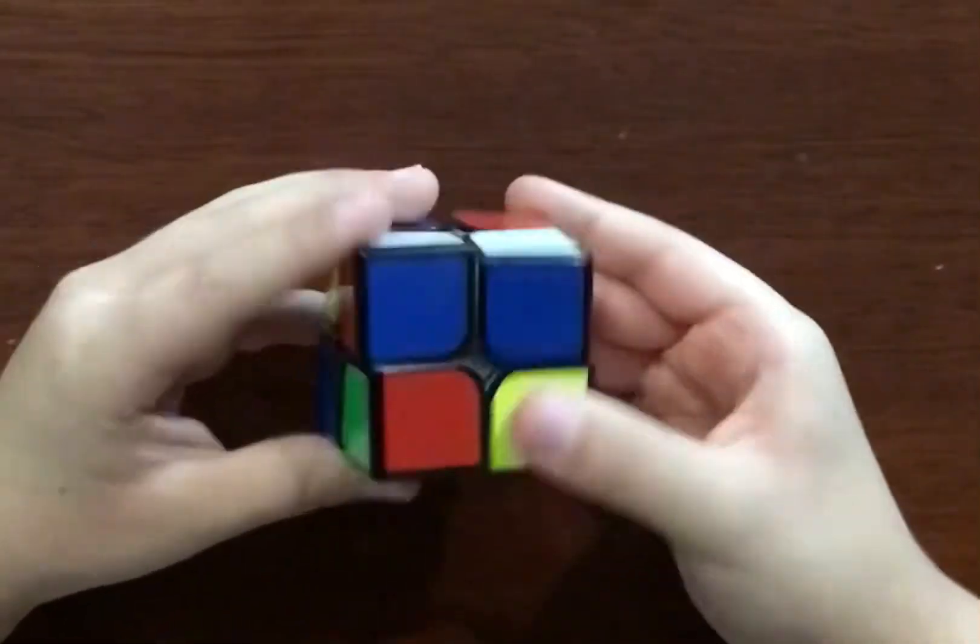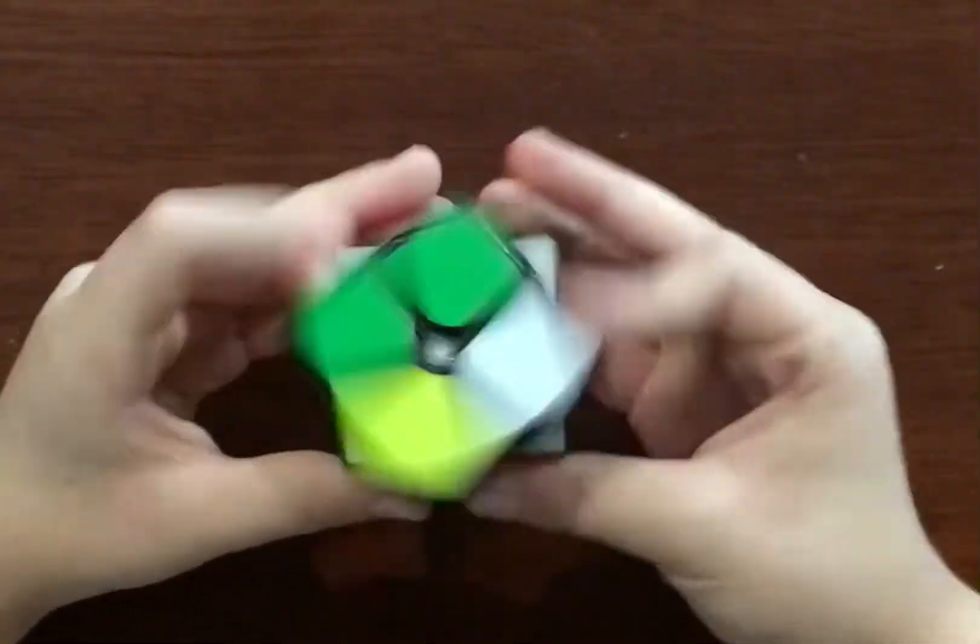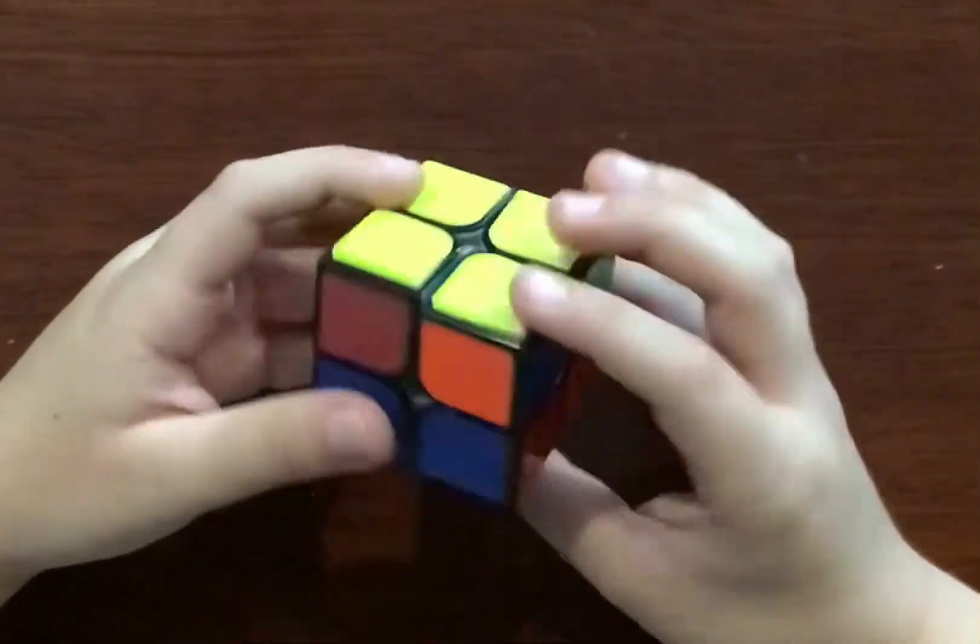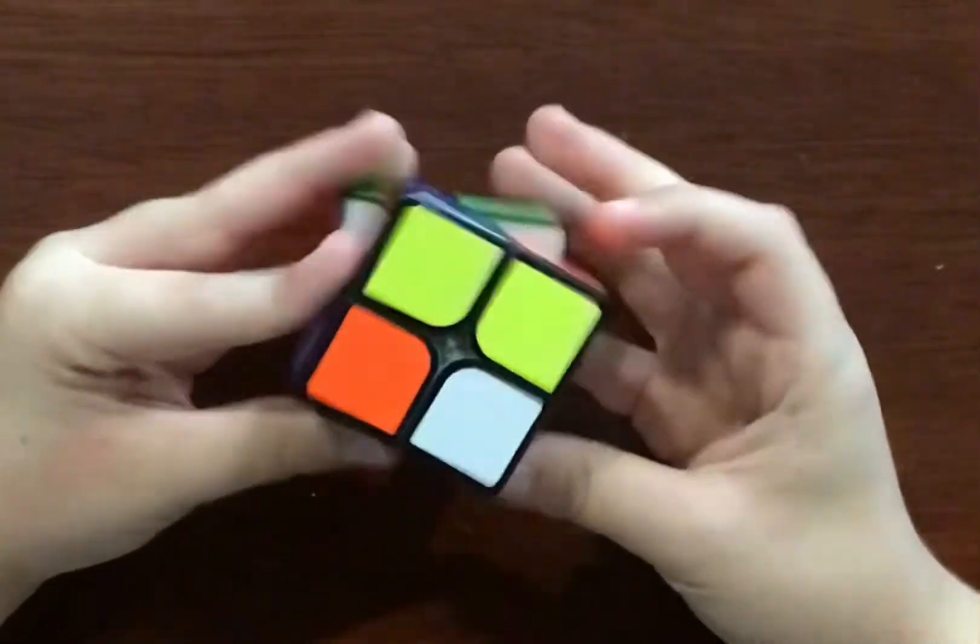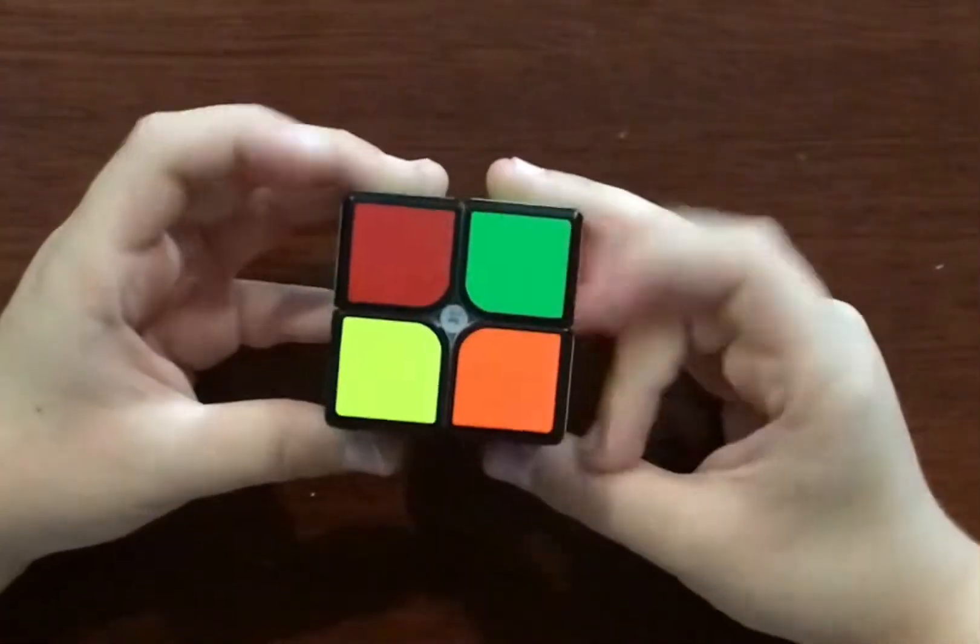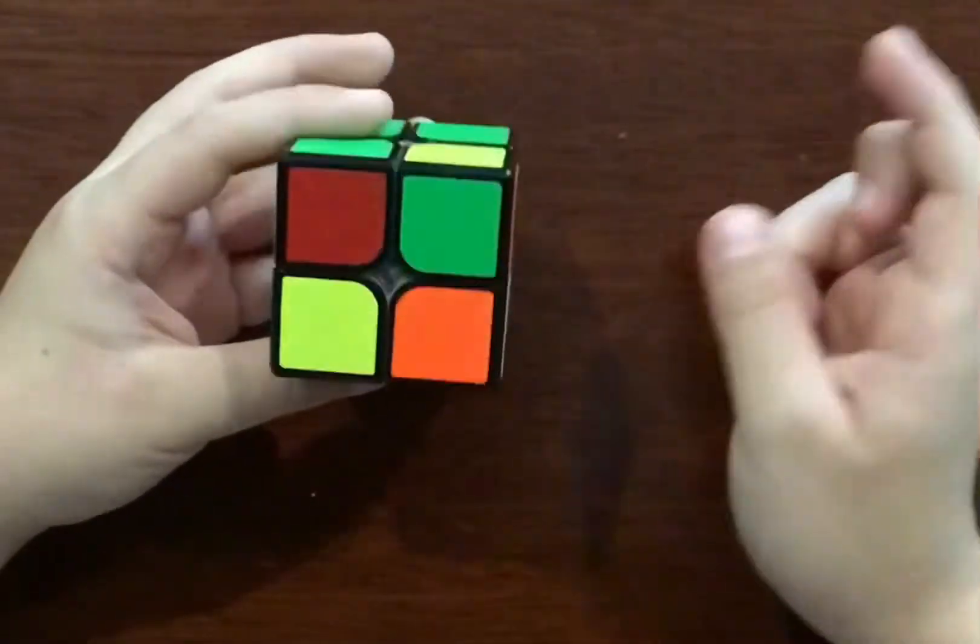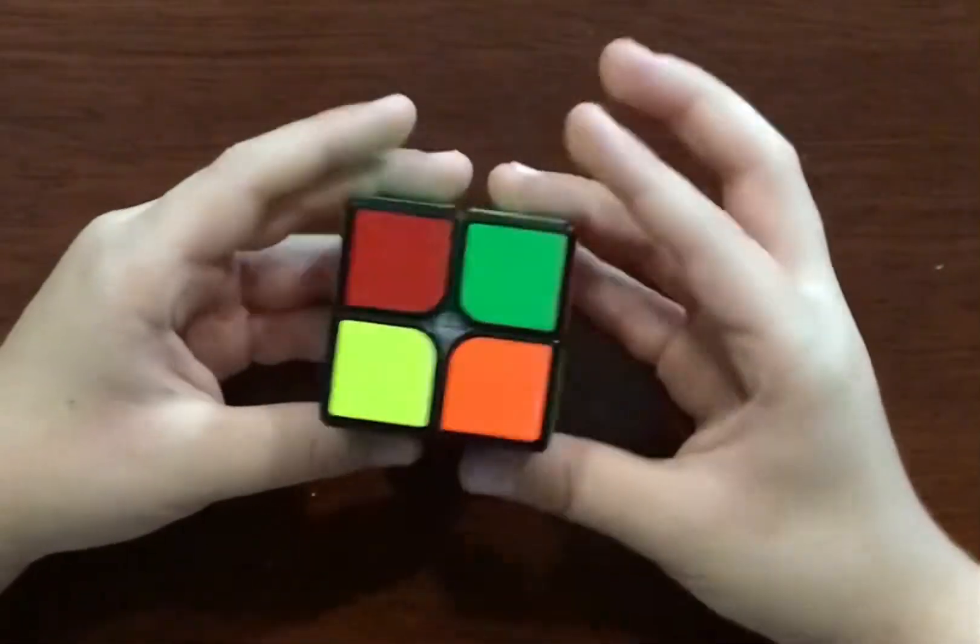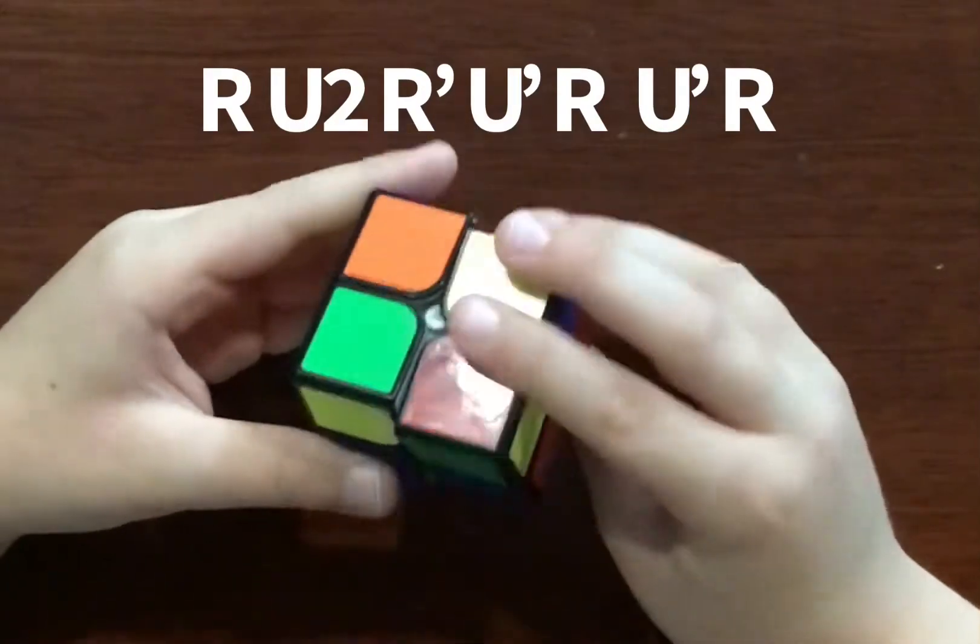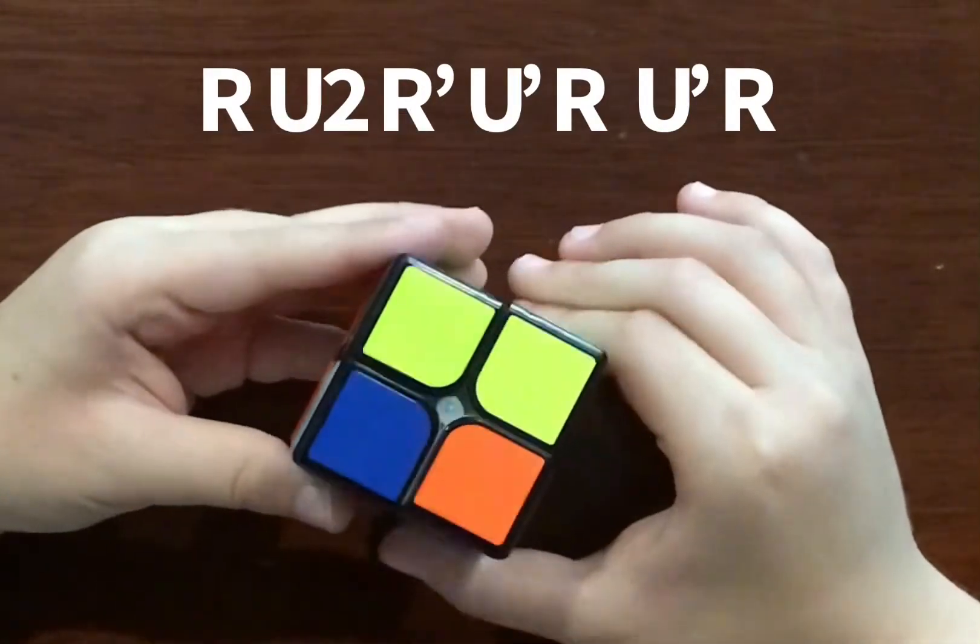But sometimes you might get this case where there's only one dot. You need to check if it's facing away or facing towards you. If it's facing away, you do a U2, and then do the backwards Sune algorithm: R, U2, R prime, U prime, R, U prime.